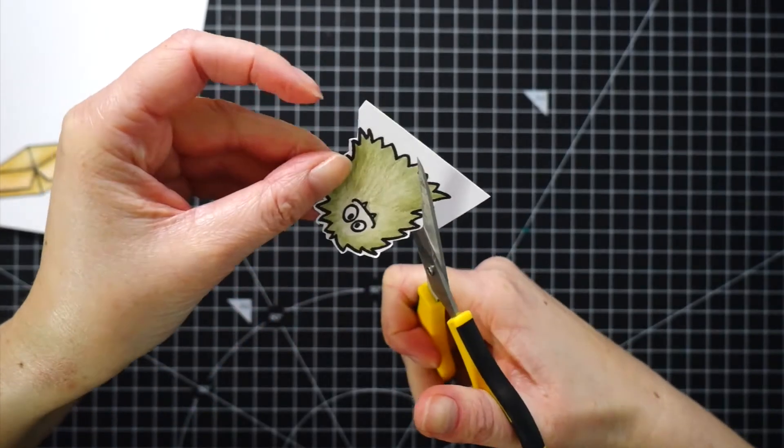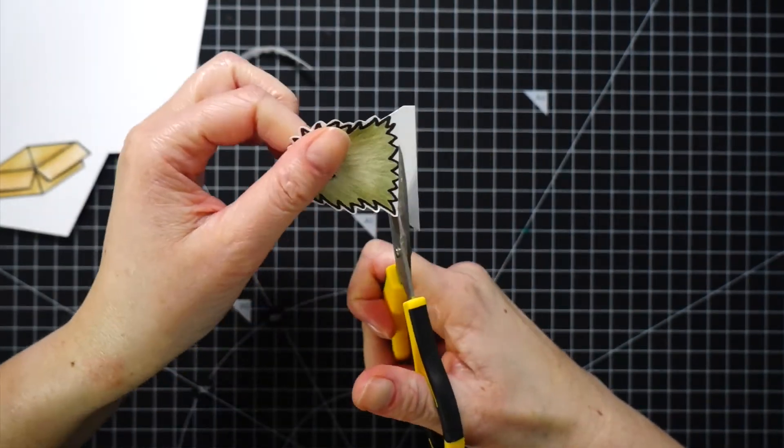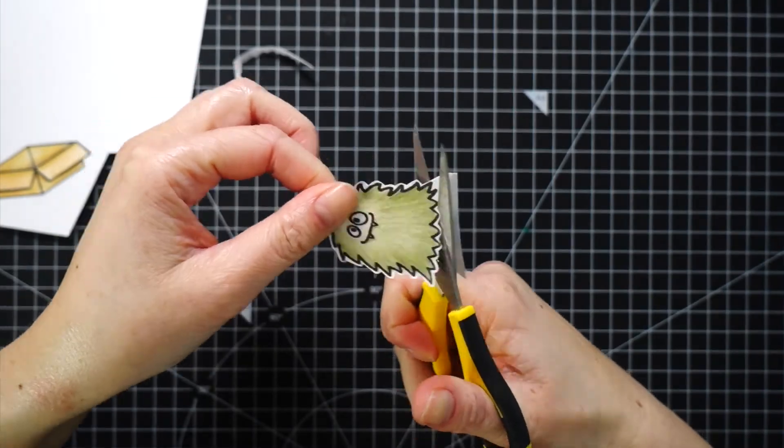Next, I cut out the images using my scissors. I think this stamp set has coordinating dies, but I rarely get those and these images were really easy to cut out.